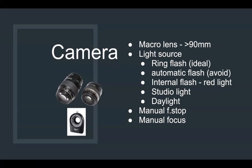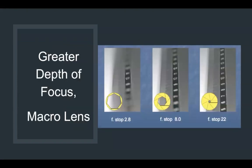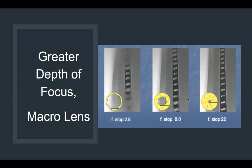Your camera system should have a manual f-stop and manual focus. The f-stop is the focal length — you can adjust it to set what length you want, and the manual focus lets you control how much to zoom. The greater the depth of focus, the greater the detail you can see. You get this through a macro lens. Your camera should allow you to manually zoom in and out to adjust the f-stop. We need a camera system with a good f-stop of at least 22.